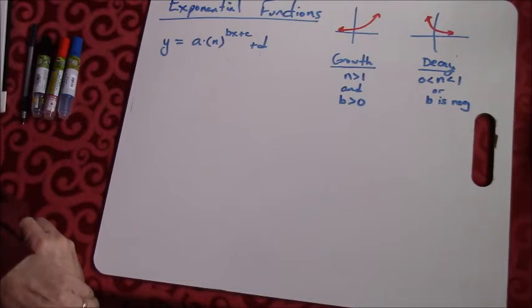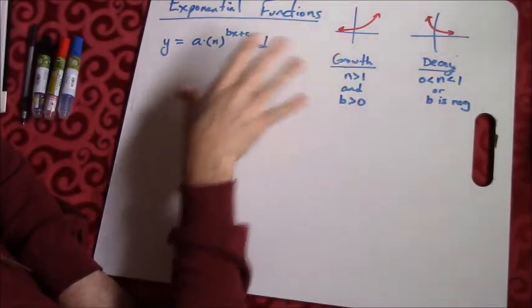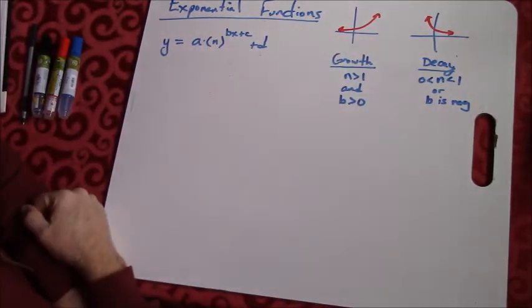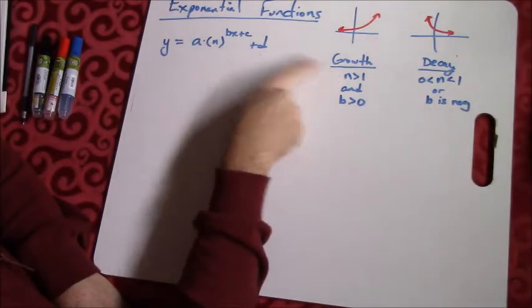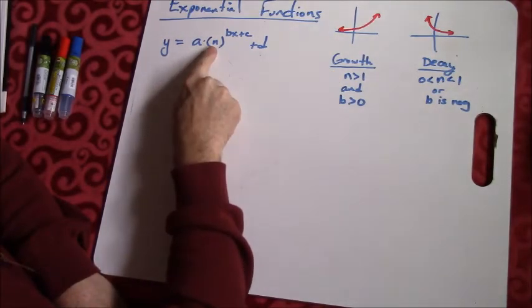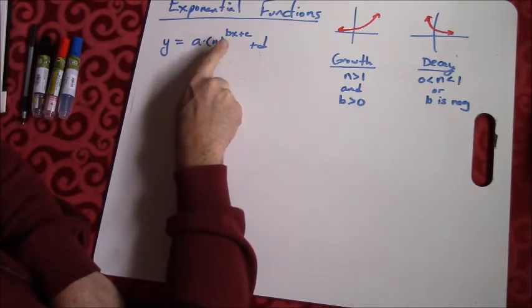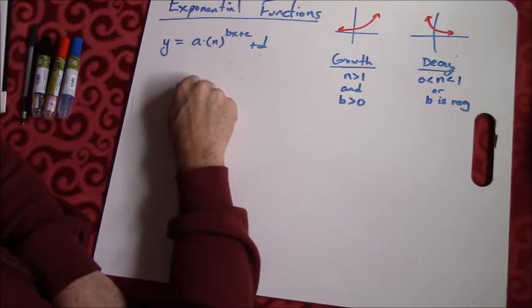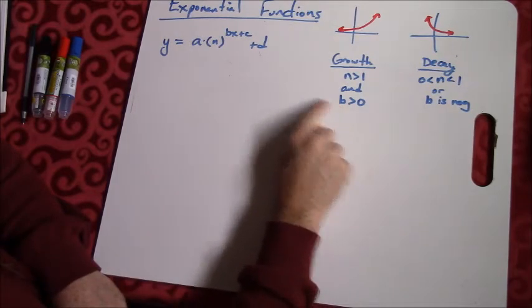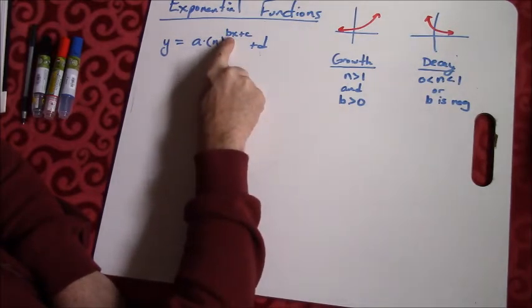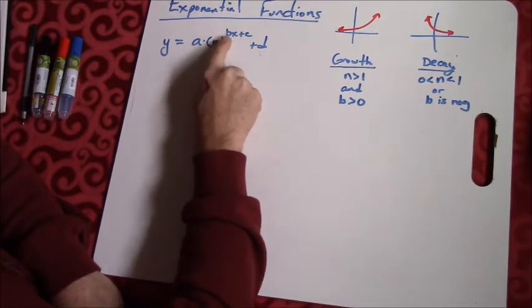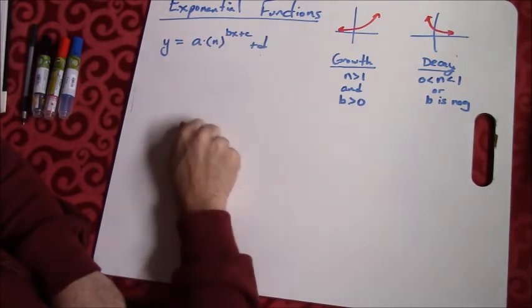So what we want to do for today is just kind of introduce the idea of an exponential function. Anytime the n value is greater than 1, and a lot of times you'll see things like 1.5, 1.2, as long as it's larger than 1, it means that it's increasing in value. And as long as the b value here is positive, then we've got exponential growth.